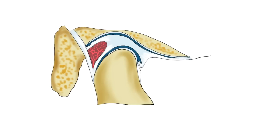Functionally, the articular disc serves as a non-ossified bone which permits the complex movement of the joint. So functionally, the articular disc acts as a third bone here — that's why TMJ is considered as a compound joint.